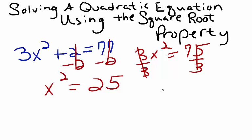Now that I've isolated x squared, I'm going to take the square root of both sides of the equation, and on the right side, I'm going to write plus or minus.